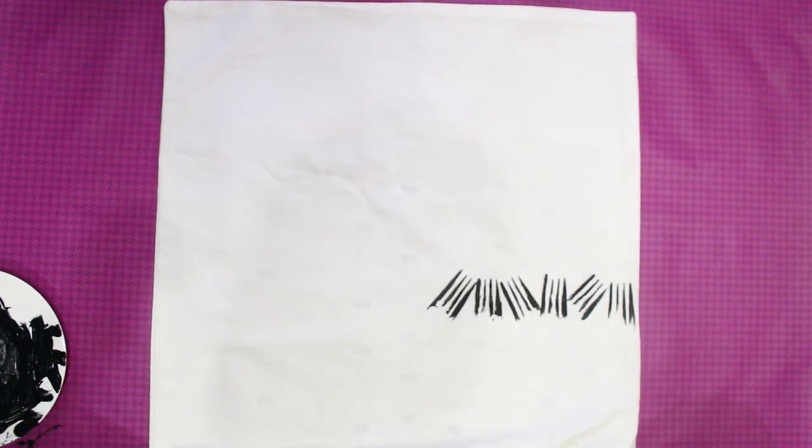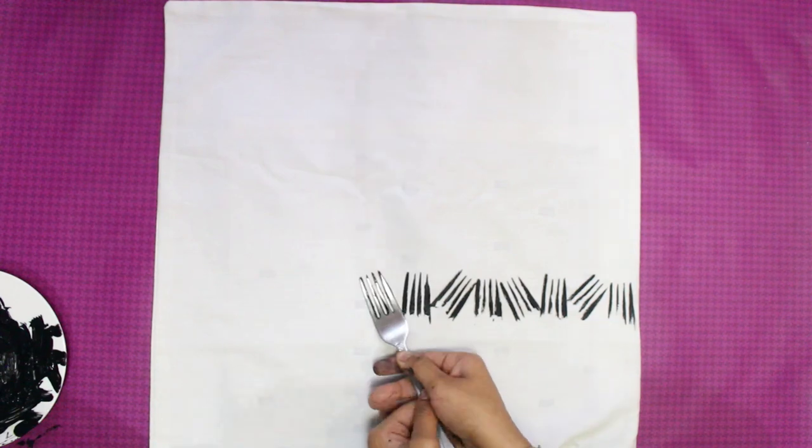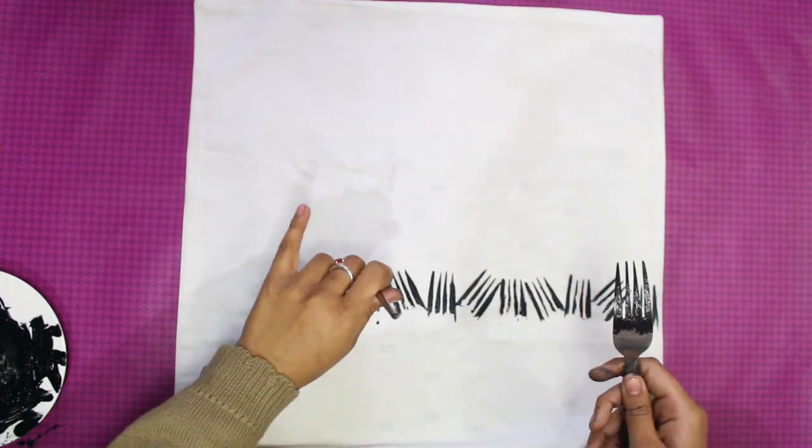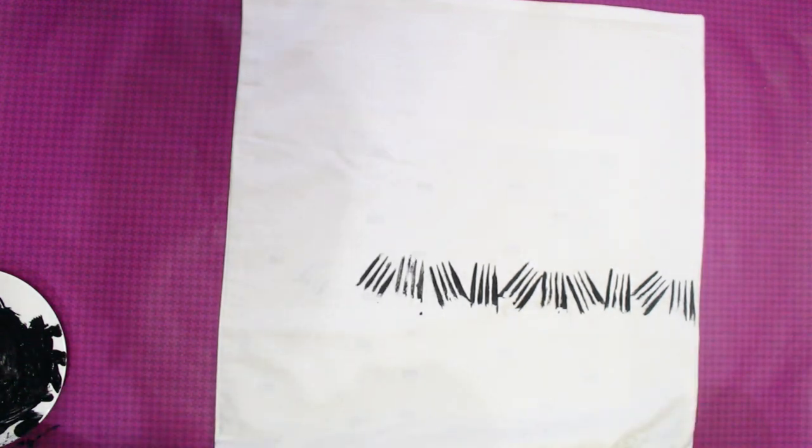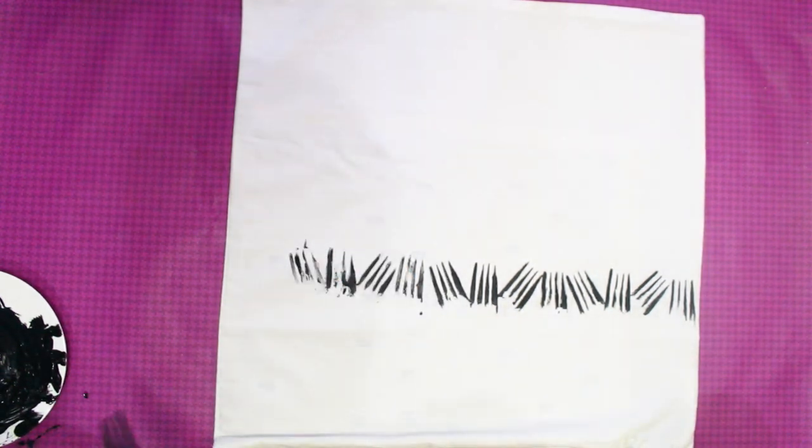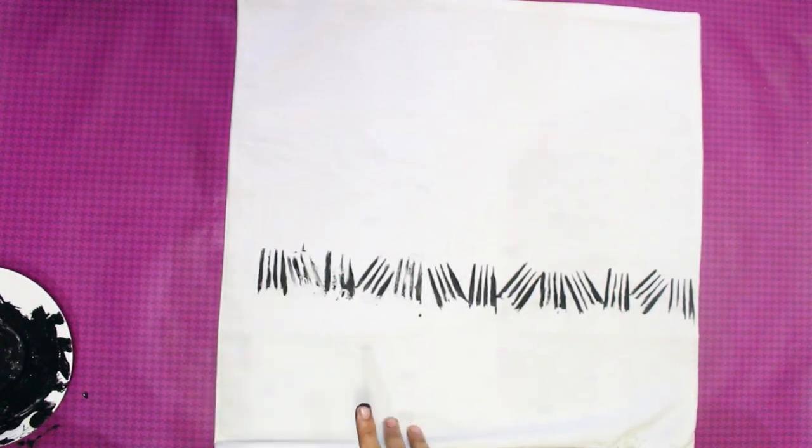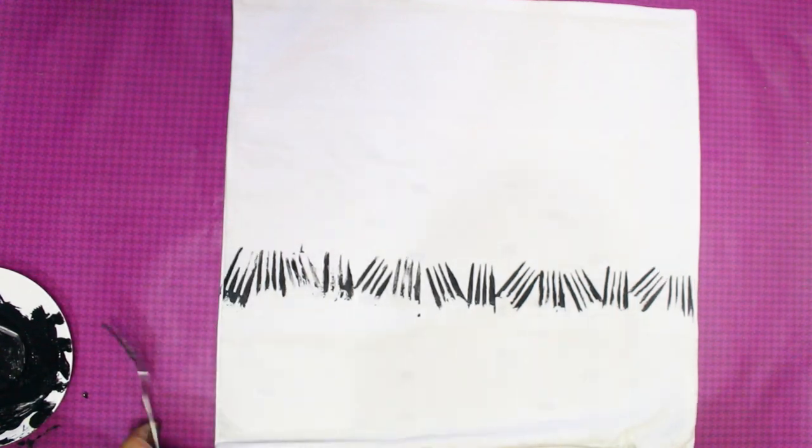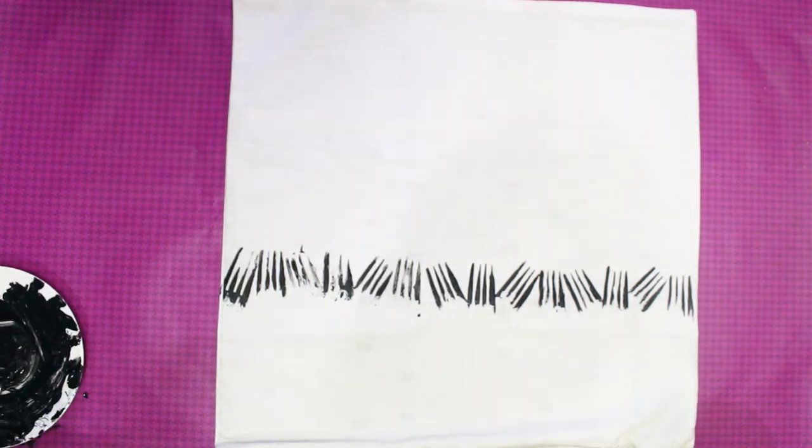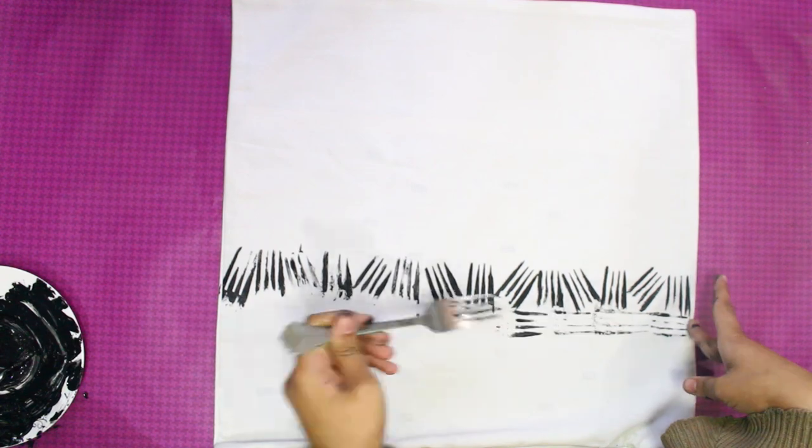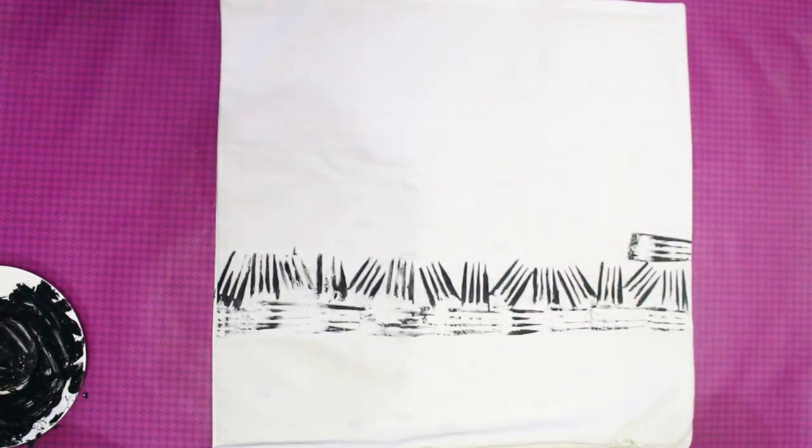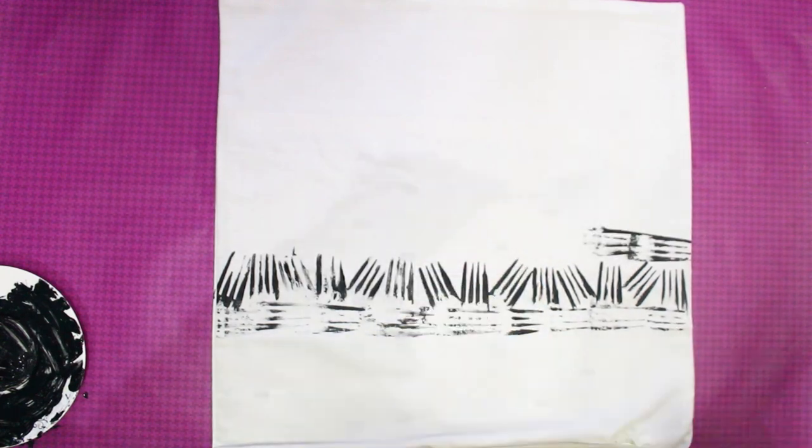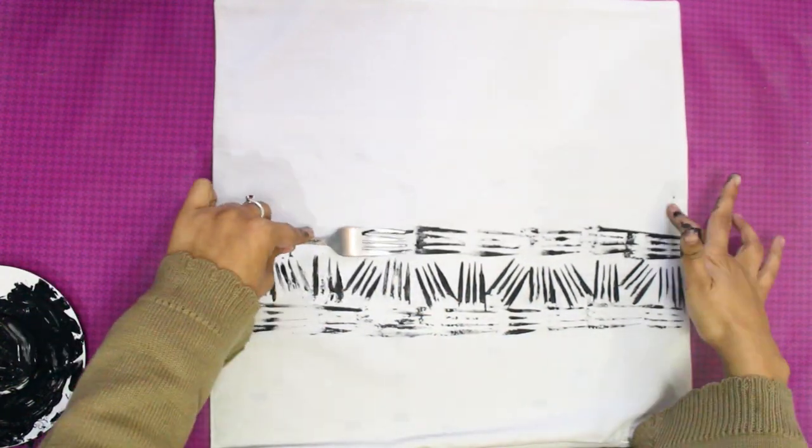I'll just make a horizontal pattern with some negative space. And I add a strip at the end.